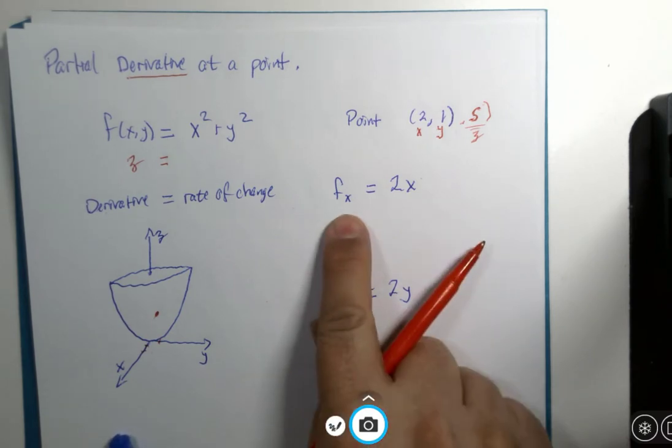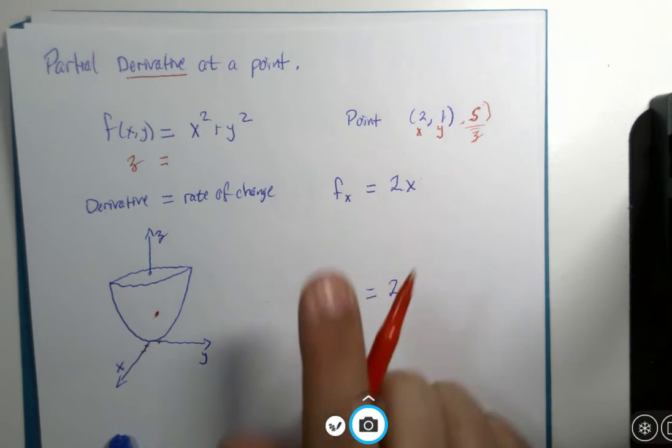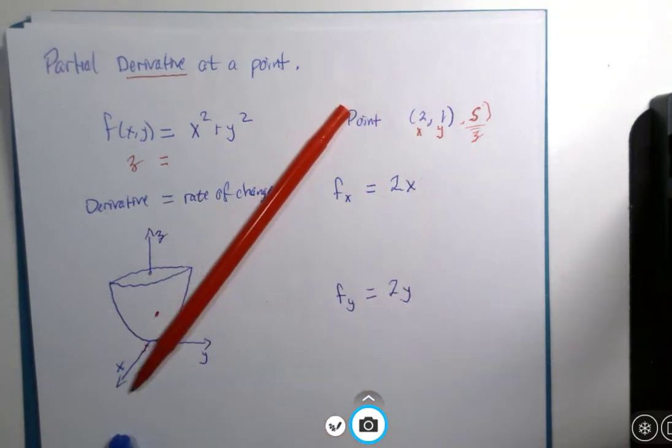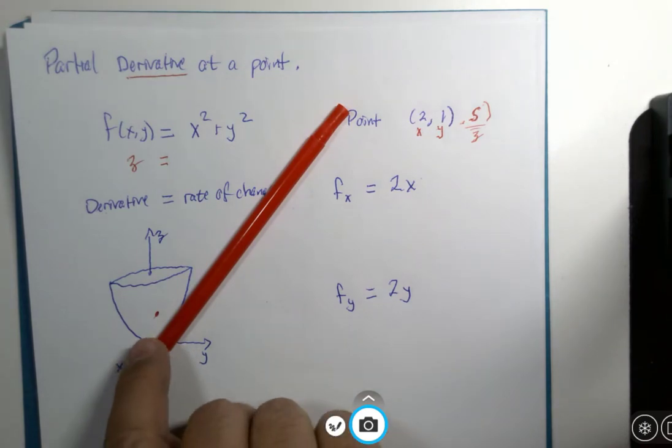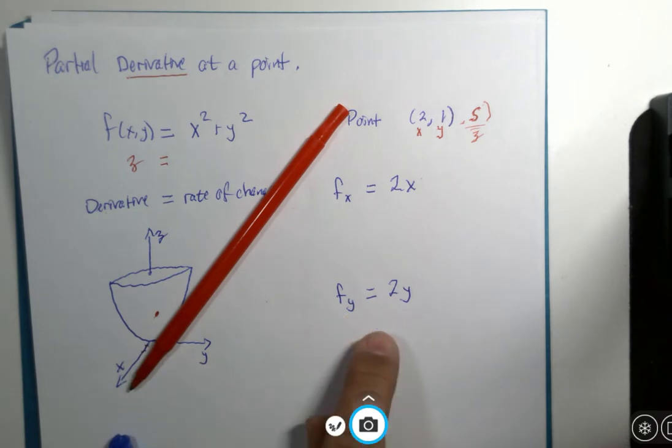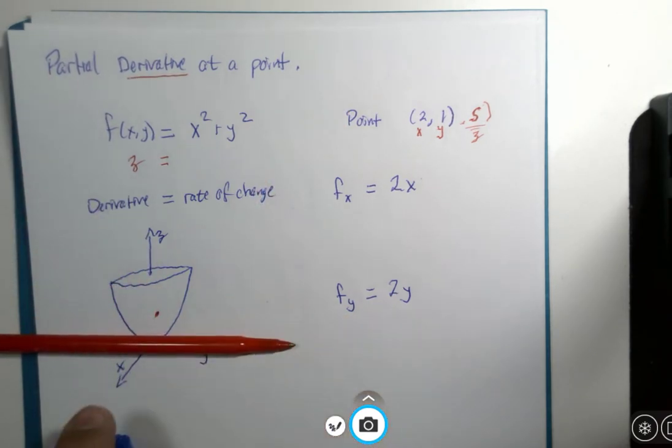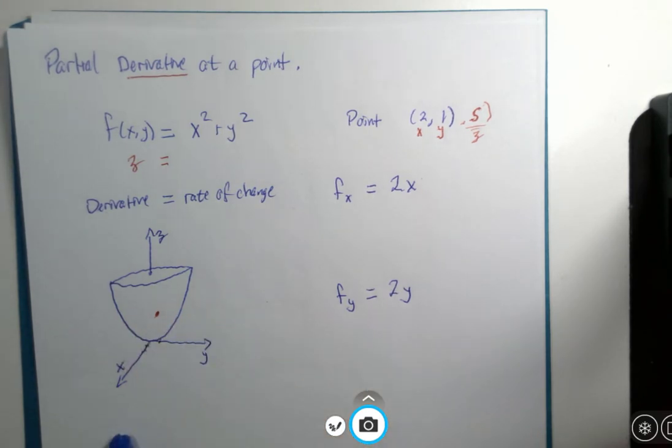Well, what this means is what is the rate of change if you were pointed in the x direction? How steep would that graph be if we were kind of climbing up the side of it? And then the partial derivative with respect to y is the same thing. What would it be like if we were aiming in the y direction? What's the change if we're aiming in that direction? And so, let's give a number to this.